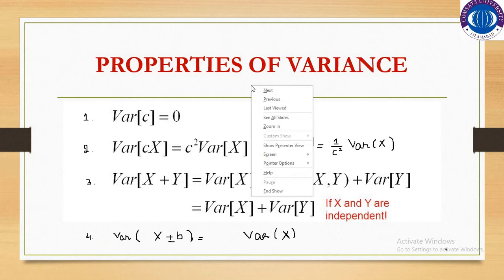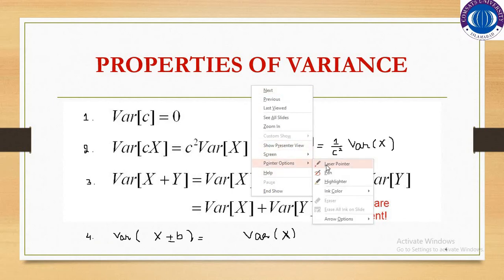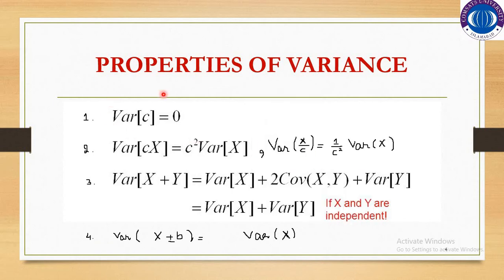The very first property is that the variance of c, where c is some constant, is always equal to 0. Whenever you find the variance of a constant, it will always equal 0.